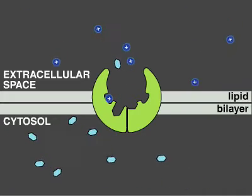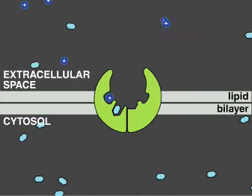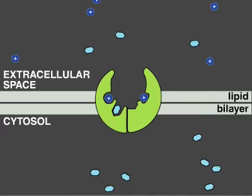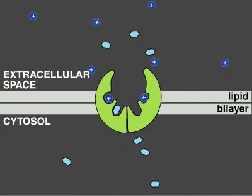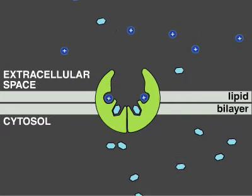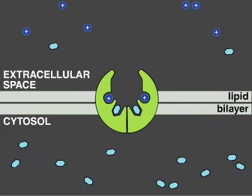Because the conformational change of the transporter will only occur when both sodium and glucose binding sites are filled, both solutes are transported across the membrane in strict unison and are released together into the cell.